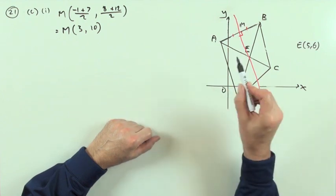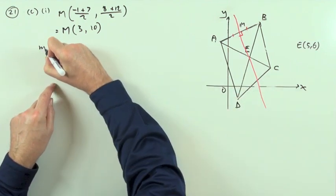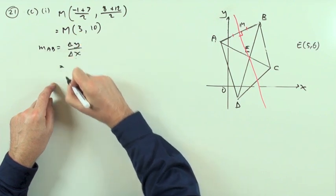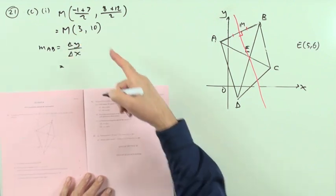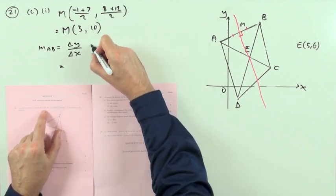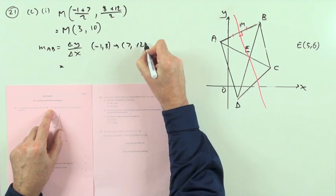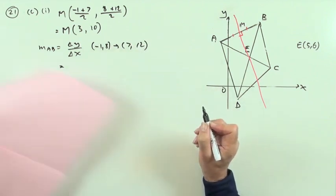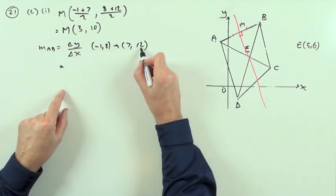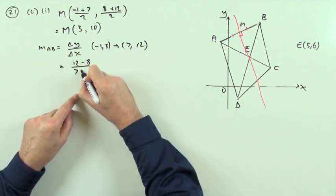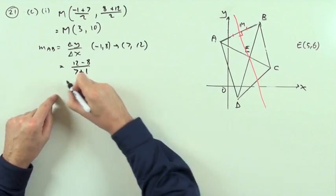Next thing's going to be what's the gradient of AB? Well that'll be the difference in y over the difference in x. Although I had them written down there I'll just take them down again carefully. That's going from (-1, 8) to (7, 12), just to make sure you don't look at the wrong numbers. So 12 take away the 8 for the difference in the y's, 7 take away the -1. It'll just jump straight into 7 + 1.